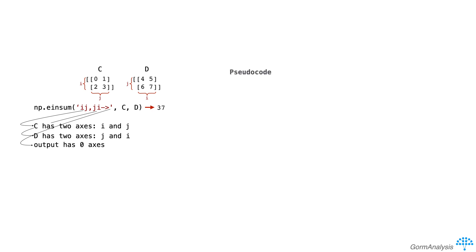Now we can write the pseudocode as: initialize output equal to 0, for each i, for each j, output += c[i,j] * d[j,i].